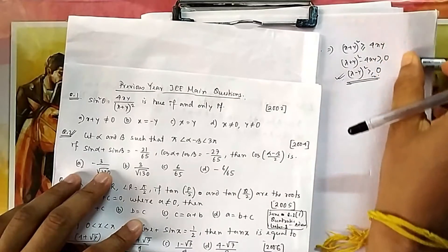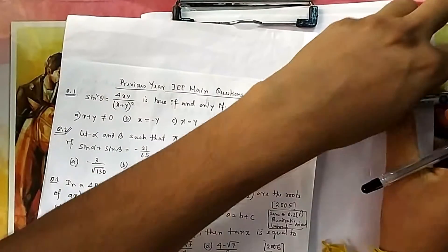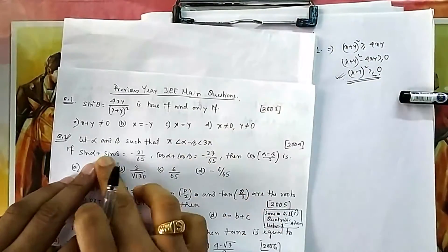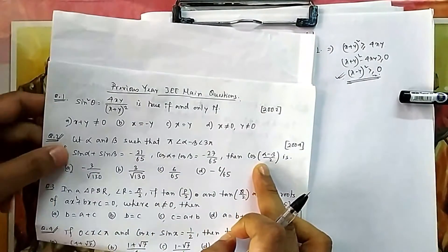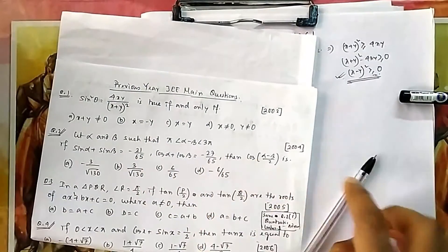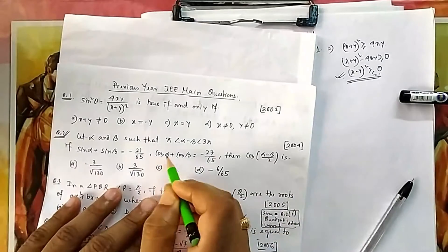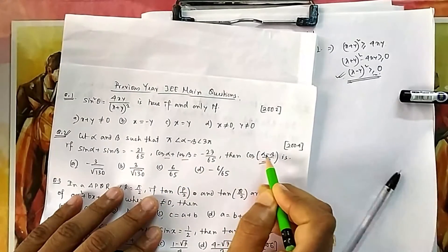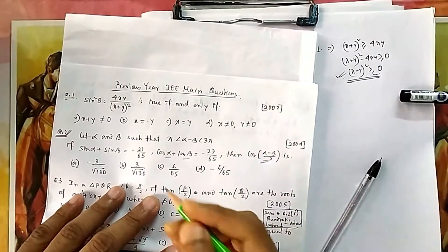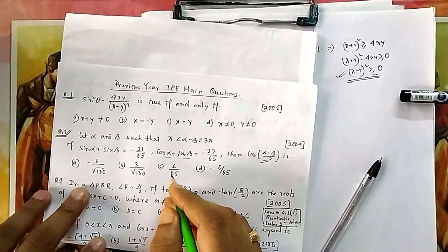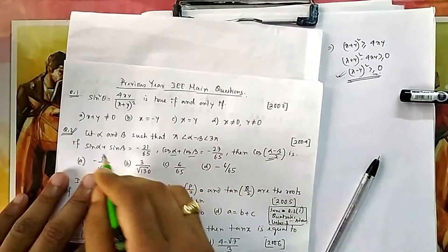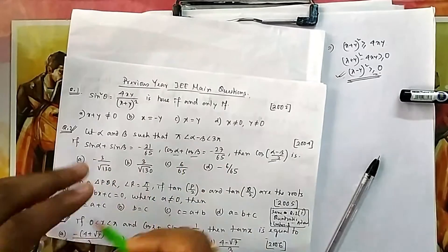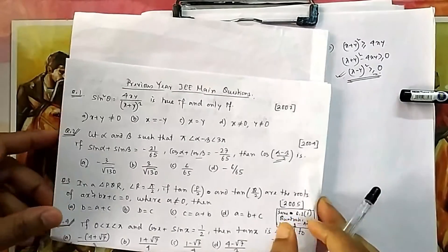In question number 2, α and β are given such that α - β lies between π and 3π. We are given sin(α+β) and cos(α-β)/2. Since we see sin and cos with these angle combinations, the sum-to-product formulas come to mind: sin C + sin D or cos C + cos D, involving (C+D)/2 and (C-D)/2.